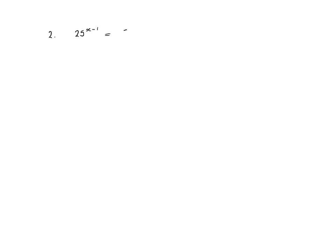For question 2, we have 25 to the power of x minus 1 equals 5 root 5. All numbers are powers of 5, so we write 5 squared to the power of x minus 1 equals 5 to the power of 1 multiplied by 5 to the power of a half.